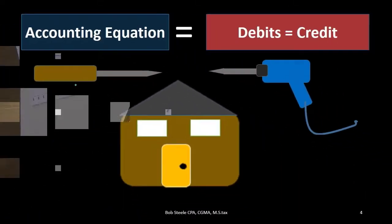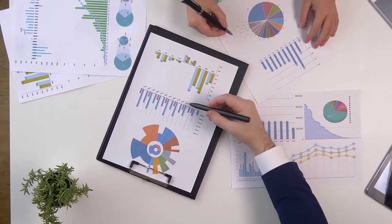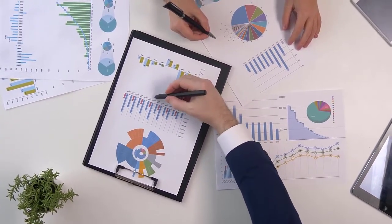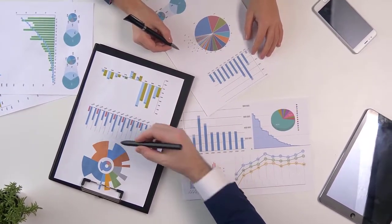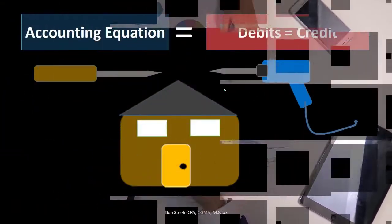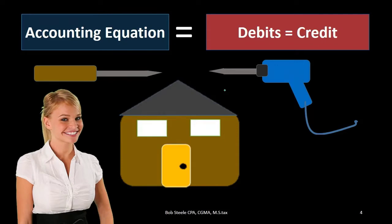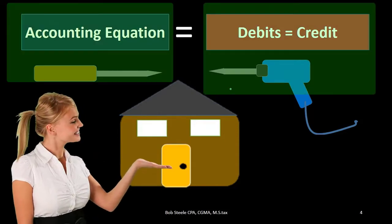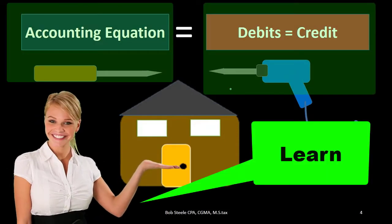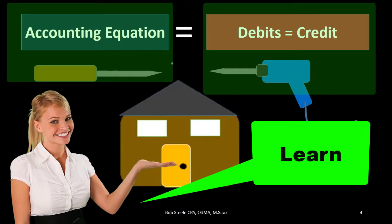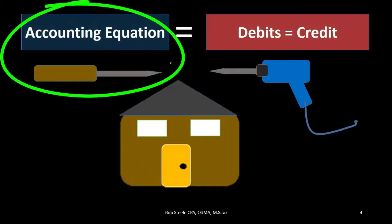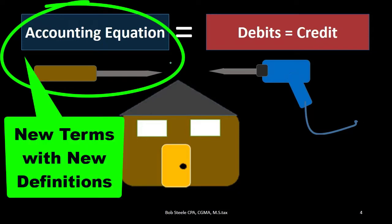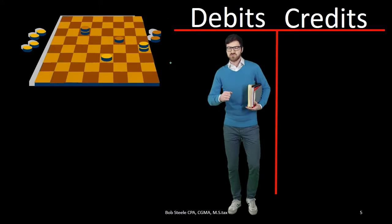So any type of accounting beyond a certain point, you have to learn debits and credits. In order to learn debits and credits, we just have to memorize them in order to use that tool. It's a new concept — not just an equation, but new terms with new definitions that we just have to memorize, just as we would memorize a game.